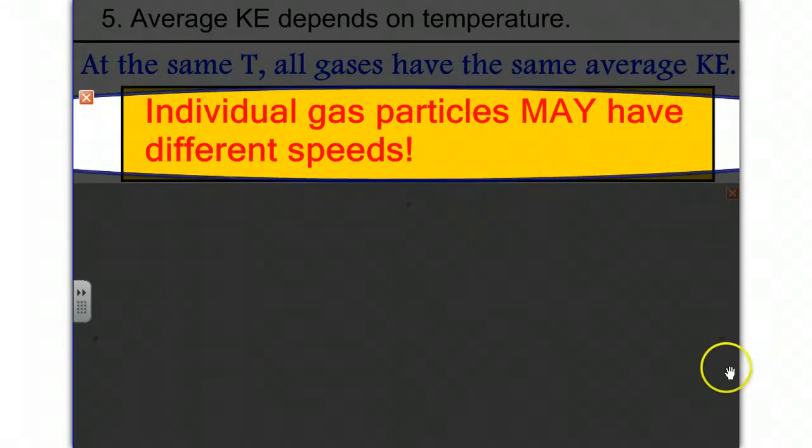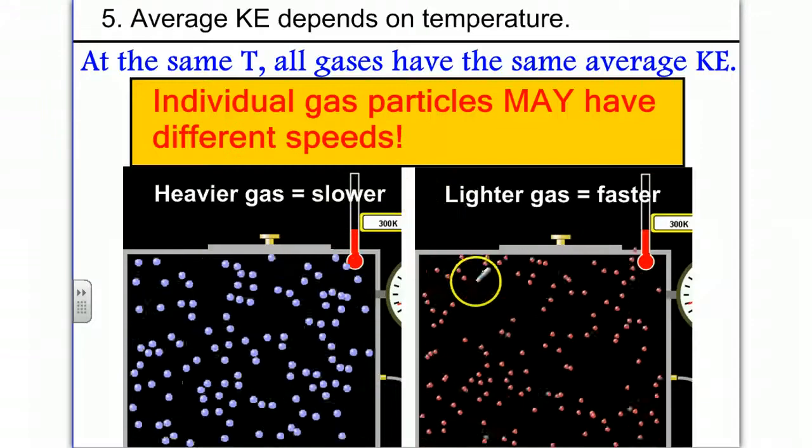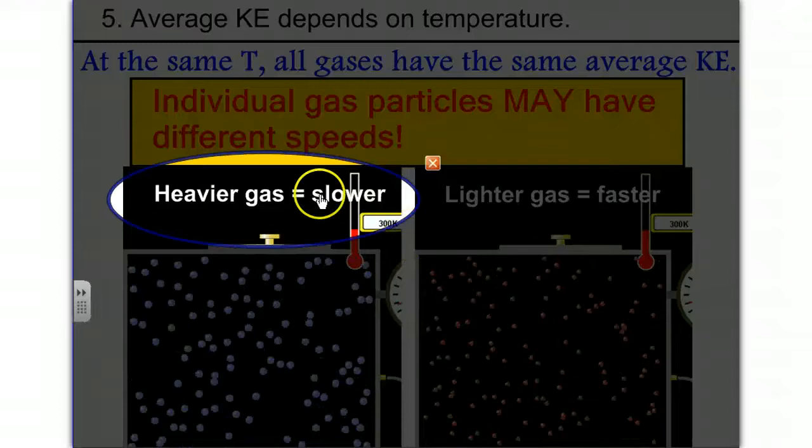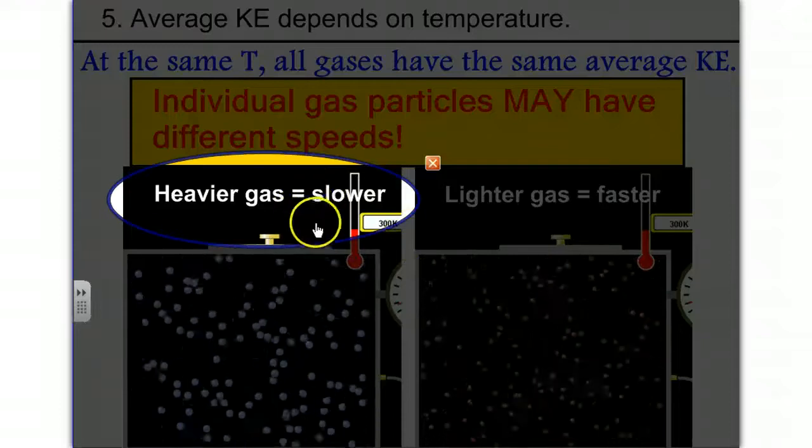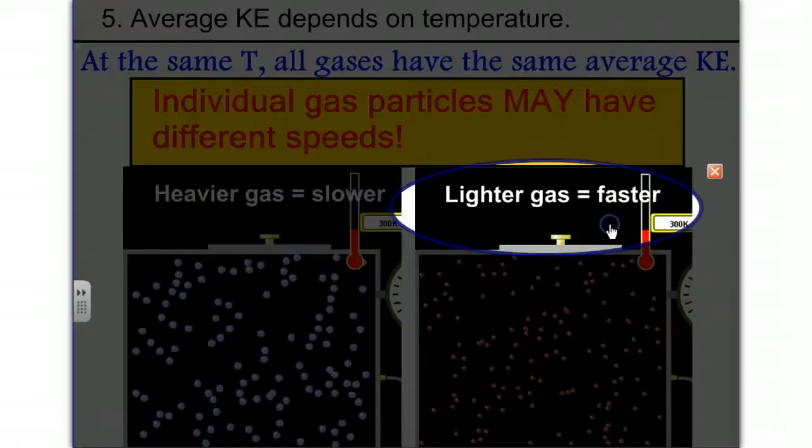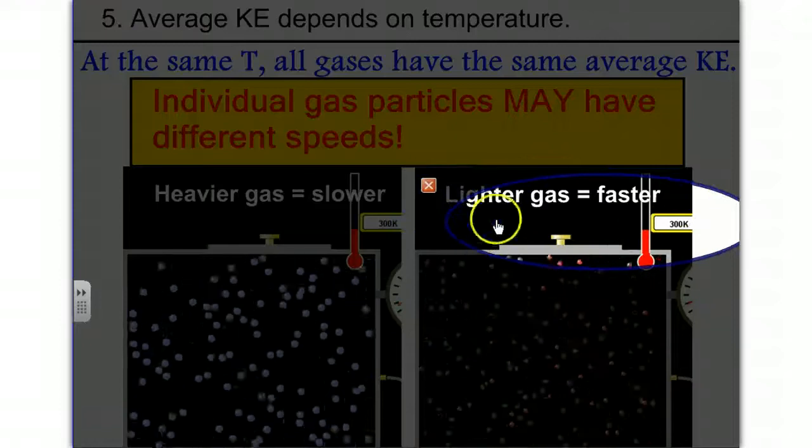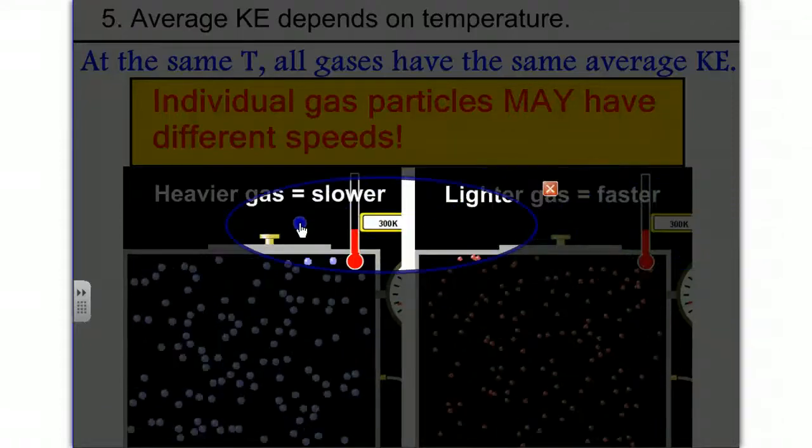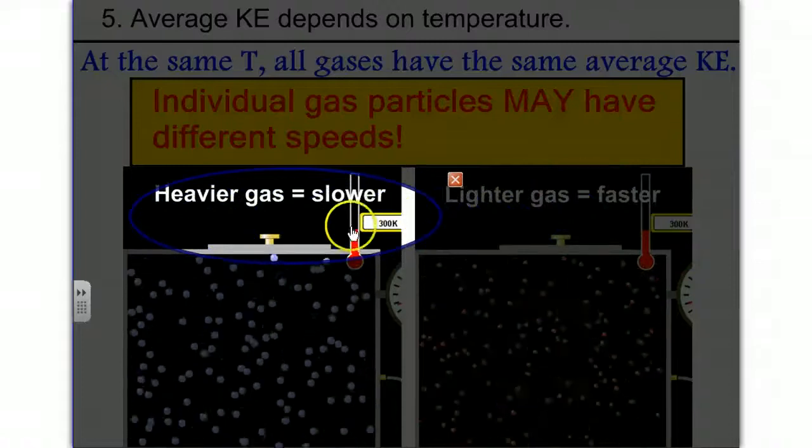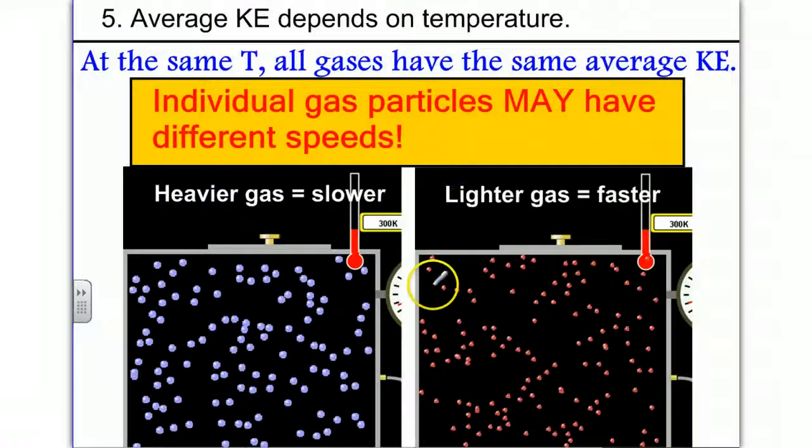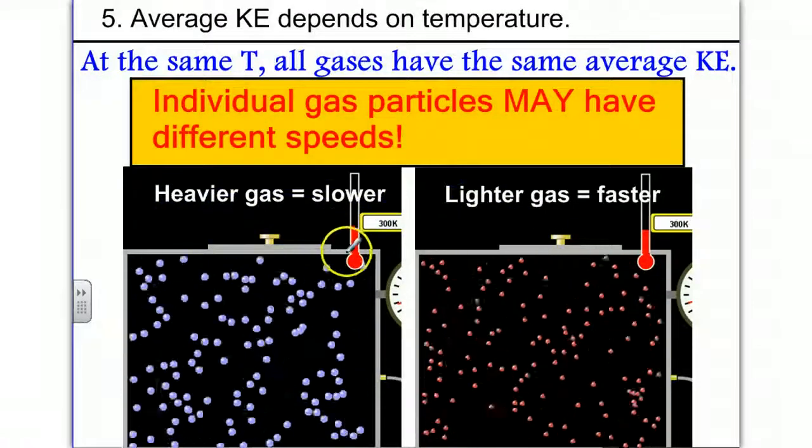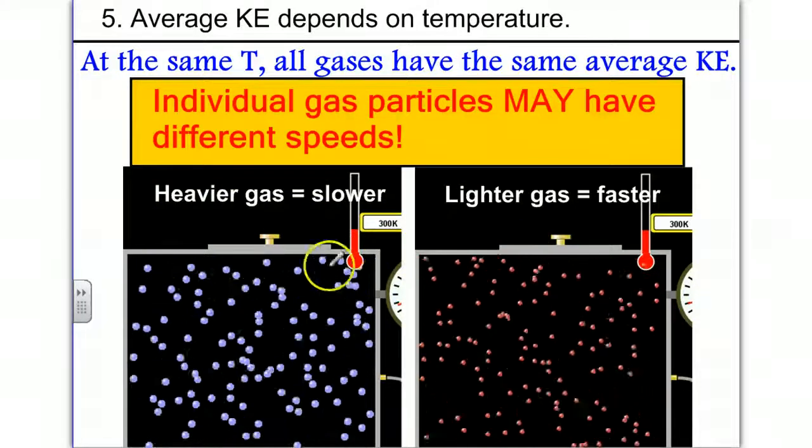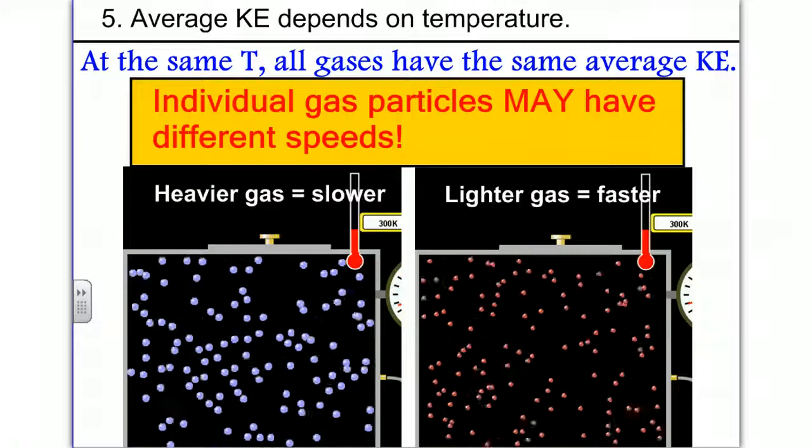We'll look at a diagram which represents this. If you have a heavier gas, it's going to move at a slower speed. If you have a lighter gas, it's going to move at a faster speed. But notice that the temperature in both scenarios is the same, 300 Kelvin. They both have the same temperature, which means they have equal kinetic energy, but they do not have the same speed, because the mass of the gases affects their speed.